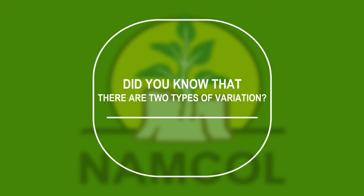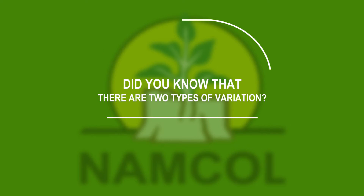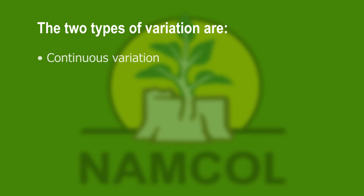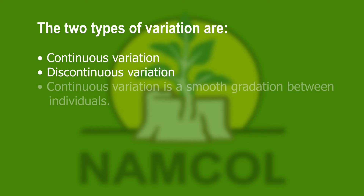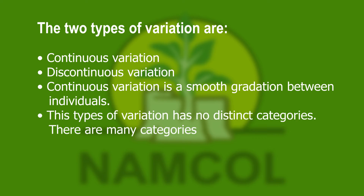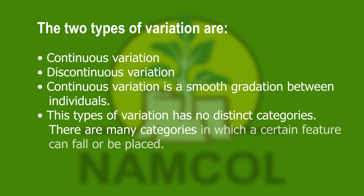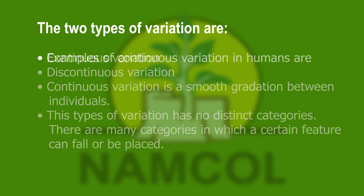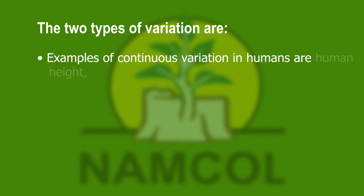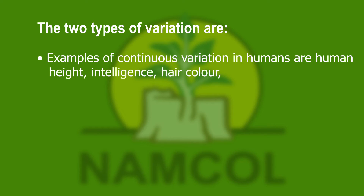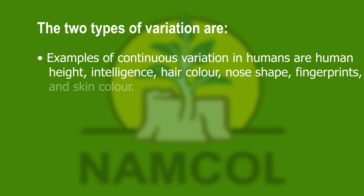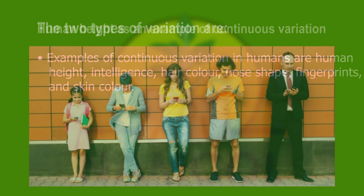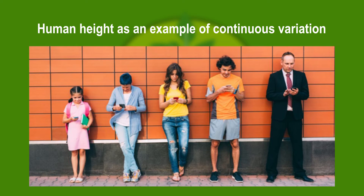Did you know that there are two types of variation? The two types are continuous variation and discontinuous variation. Continuous variation is a smooth gradation between individuals — this type of variation has no distinct categories, as there are many categories in which a certain feature can fall. Examples of continuous variation in humans are human height, intelligence, hair color, nose shape, fingerprints, and skin color. The graphic shows human height with many categories, thus representing continuous variation.